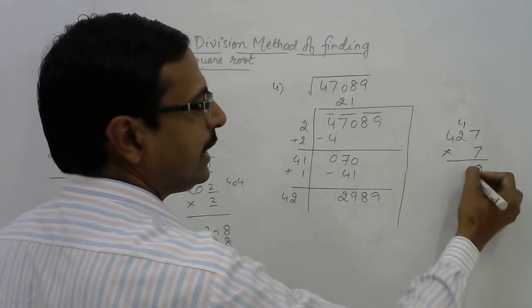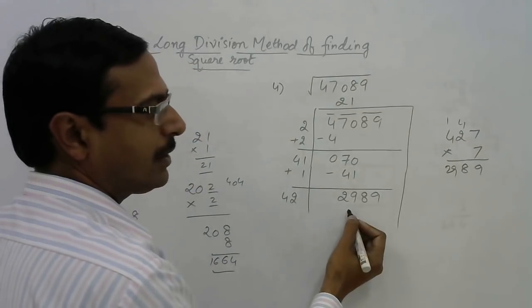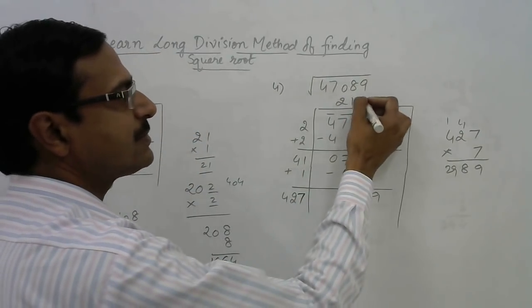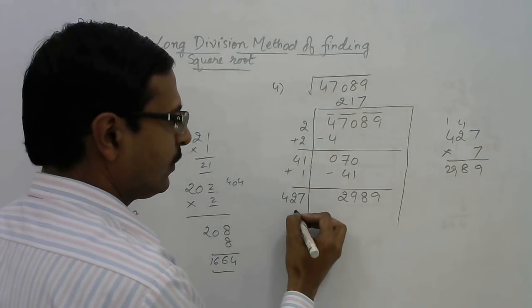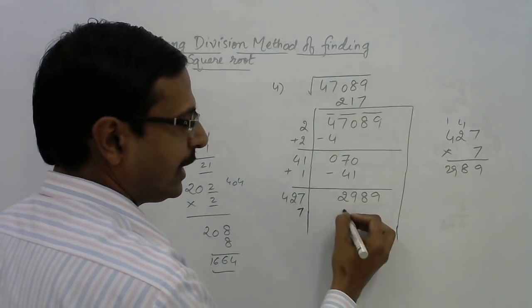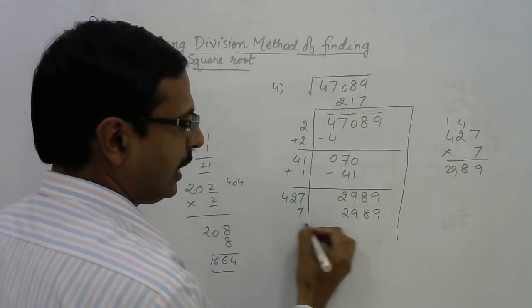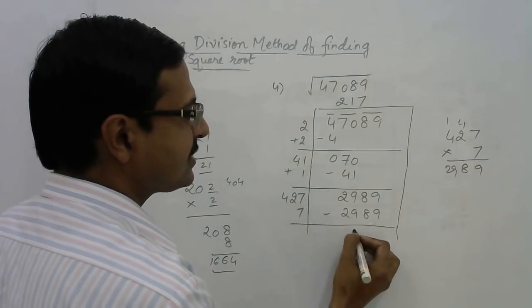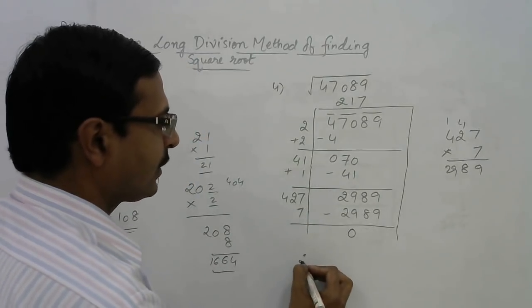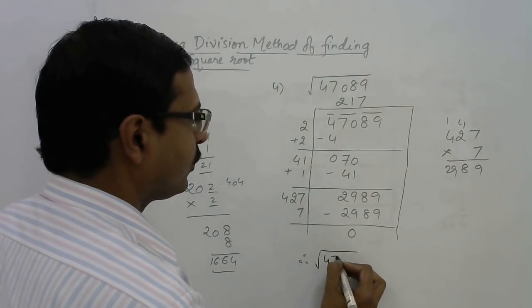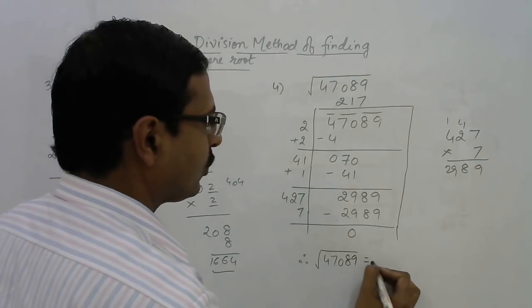7749, 1418, 2989. Same number. So 7 comes here, 7 comes in answer giving you 2989 as a product, and if you take the difference, this will come to 0. Therefore, square root of 47089 will come out to be 217.